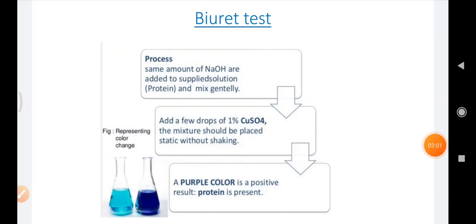So coming to the first, that is the biuret test. So what is the procedure? We should take a test tube and a same amount of NaOH are added to supplied solution. Means if we take 1 ml of protein, then we can take 1 ml of NaOH and we can mix it gently.